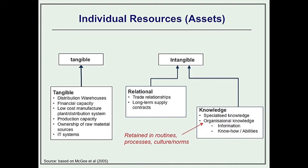Resources can also be intangible. They can be relational — perhaps that relationship with a key customer, a major supplier, or amongst the management team of an organisation. Another important type of asset is knowledge: specialist know-how in optics as we talked about earlier, or organisational knowledge — both information and data but also know-how that's contained within the routines, processes, culture, and norms of the firm.